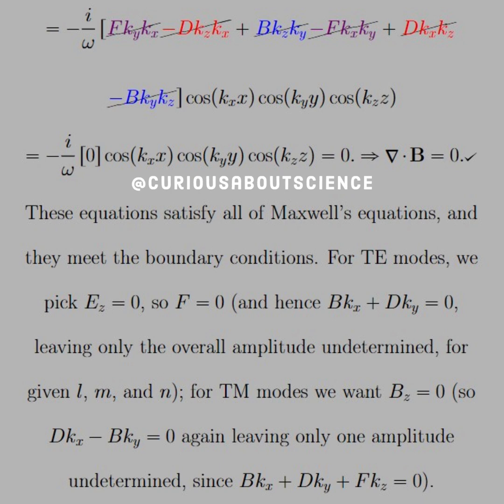So for TE modes we pick EZ equals zero and so F equals zero, hence the BKX plus DKY equals zero when we're referencing the electric field, leaving the overall amplitude undetermined for some given L M and N. For TM modes we want BZ equals zero, so that's the case we go back and all that's left there is DKX minus BKY equals zero. Notice how we have some little cross over there again, leaving only one amplitude undetermined since we have BKX and DKY plus FKZ equals zero from the stipulation on the electric field. All right, I think we're pretty good there.